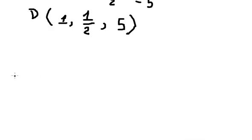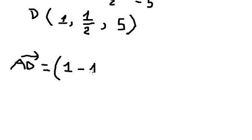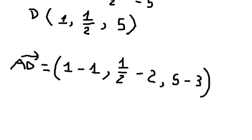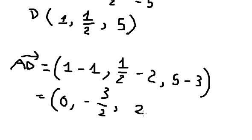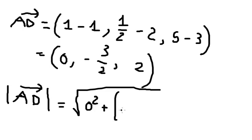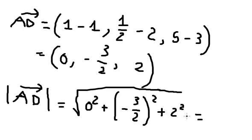So D is at coordinates (1, 1/2, 5). Now we need to find vector AD. We have D at (1, 1/2, 5) minus A at (2, 3), giving us components: zero, negative three over two, and two. Now we can find the magnitude of vector AD. We calculate this and that is about the square root of 5 over 4, times two.